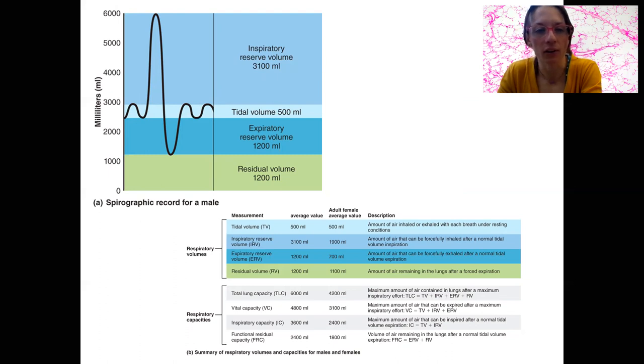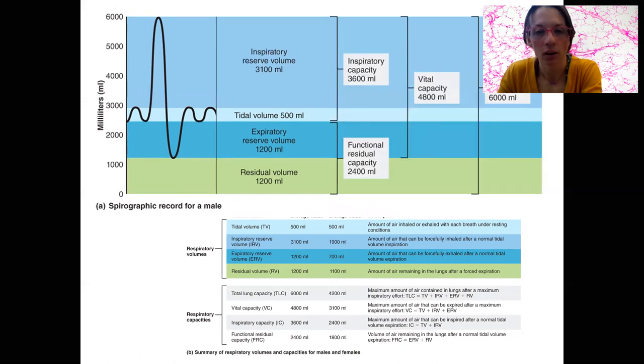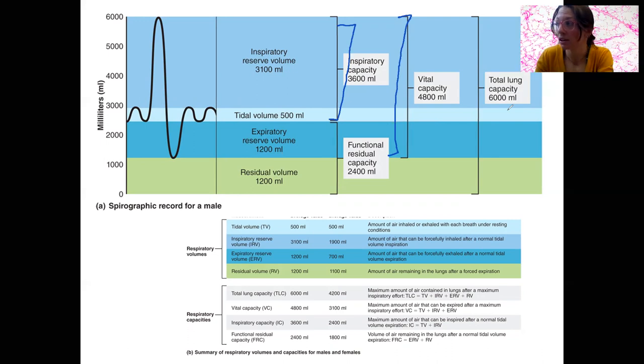You could add together those tidal volume with the inspiratory reserve volume and you'd get inspiratory capacity. You could add all three of those together and get vital capacity. And this whole entire one here is your total lung capacity.